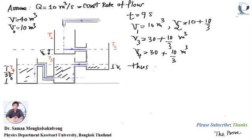The answer is that tank 3 and tank 4 will be full first — that means they fill simultaneously. Okay, thanks for your listening.